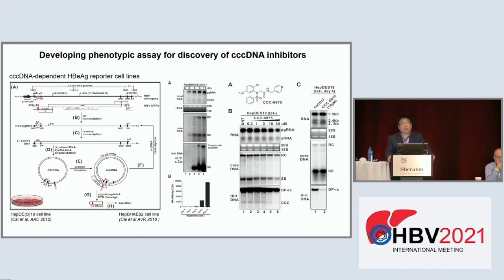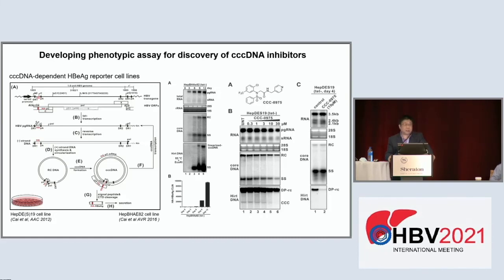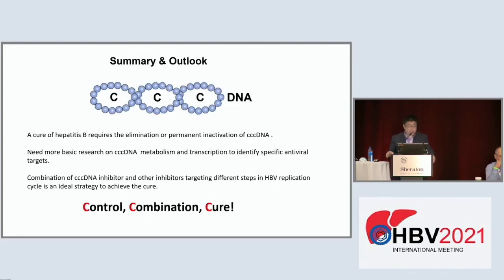There should be more effort specifically looking for cccDNA inhibitors through cell-based phenotypic screening. Our lab has developed cccDNA reporter cell lines using either HBeAg or HBe-type antigen as readout for cccDNA surrogate markers. These cell lines have been used in low-to-medium throughput screening and have scored inhibitors targeting different steps of cccDNA metabolism, and could be used for larger-scale screening. A cure of hepatitis B requires elimination or permanent inhibition of cccDNA transcription, and we need more basic research on cccDNA metabolism to identify specific antiviral targets. Combination of cccDNA inhibitors with other inhibitors targeting different steps in the HBV replication cycle is the ideal strategy to achieve cure.